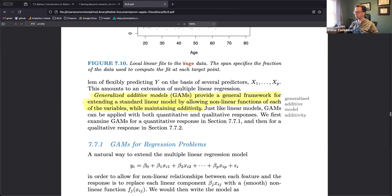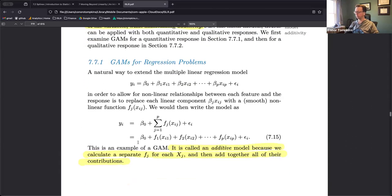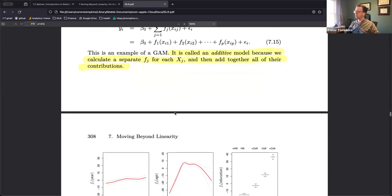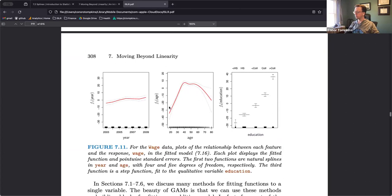Here we're getting into GAMs, the generalized additive model. These are extensions of the simple linear regression. This gives us the ability to apply non-linear functions to our predictors while maintaining the additivity of the model itself. We can kind of create a separate function for each predictor and then add all our contributions together.